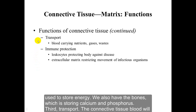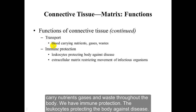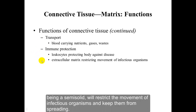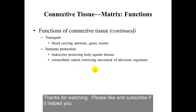For transport, the connective tissue blood carries nutrients, gases, and waste throughout the body. We have immune protection, with leukocytes protecting the body against disease. Many leukocytes are found within the extracellular matrix of these tissues. Because some of the extracellular matrix is semi-solid, it will restrict the movement of infectious organisms and keep them from spreading.